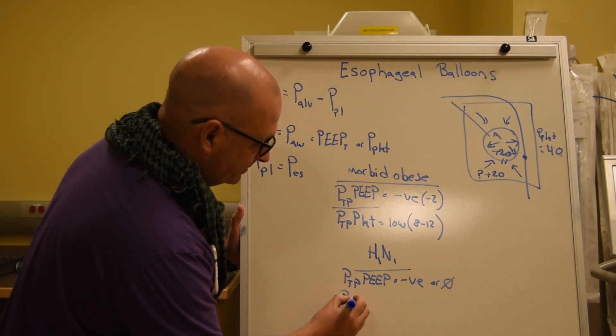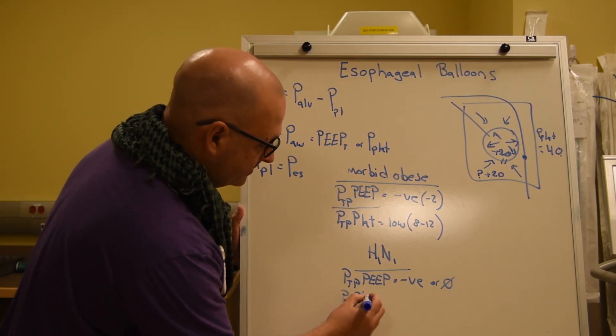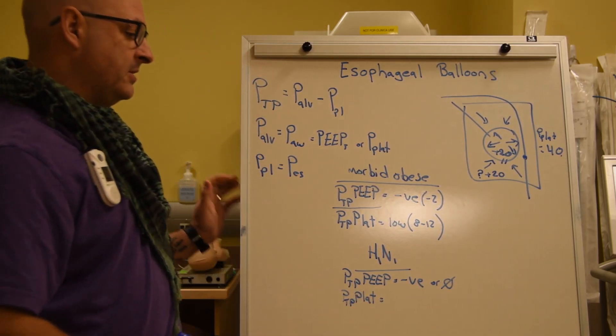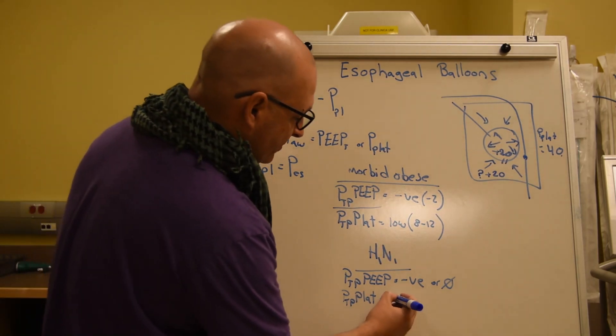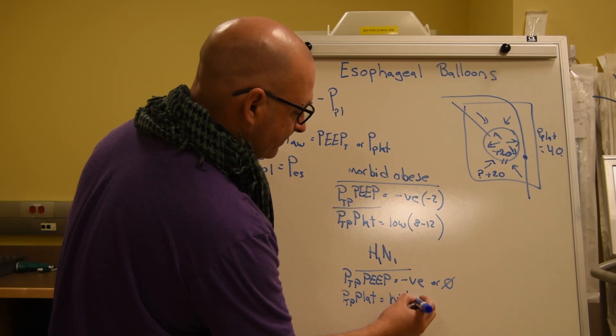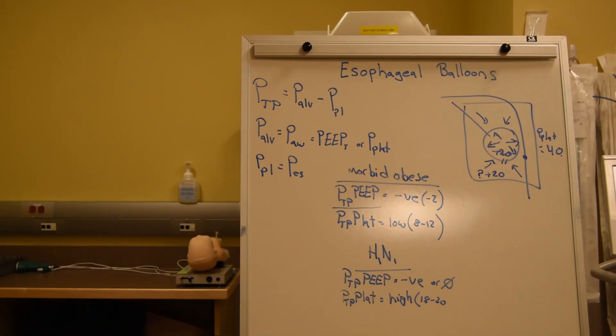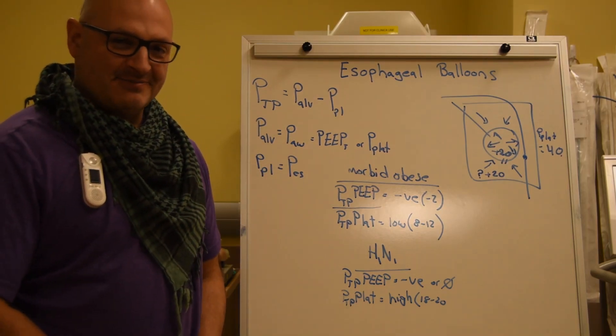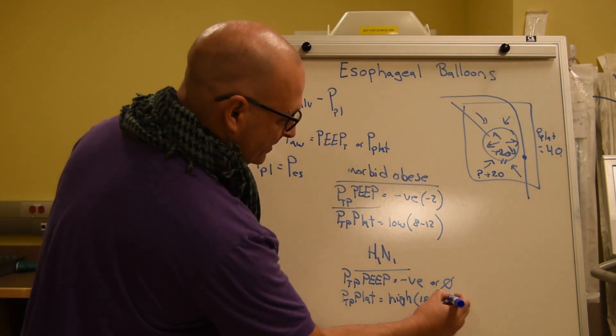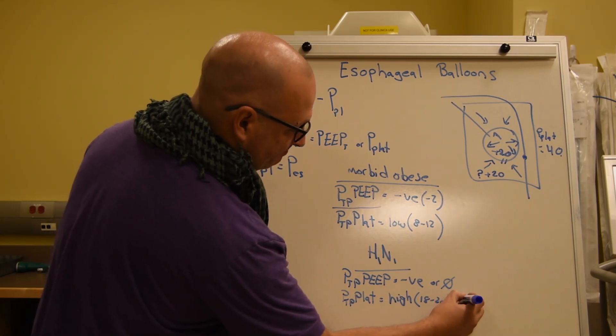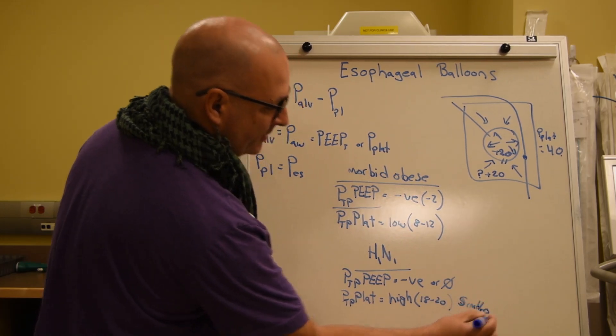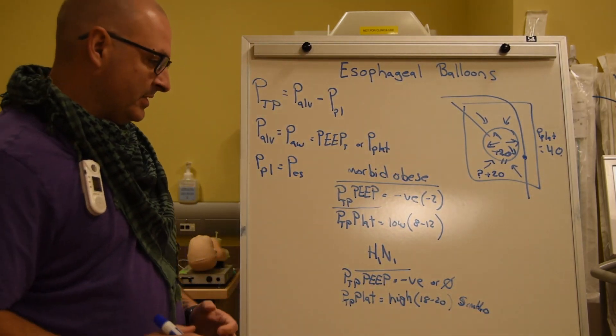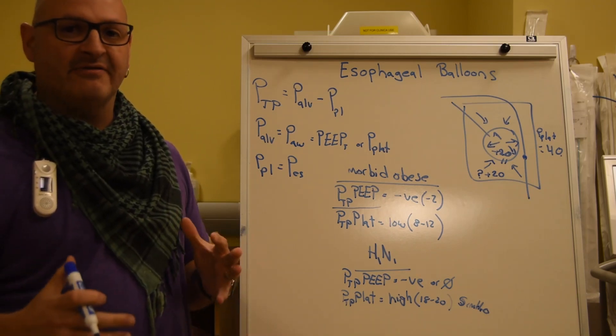Moving on to step two, what do we do? Well, they have a sick lung. We know that. So we might expect a high value. What does that mean? That means we could have five centimeters of water to actually play with to optimize our patient. We have room.